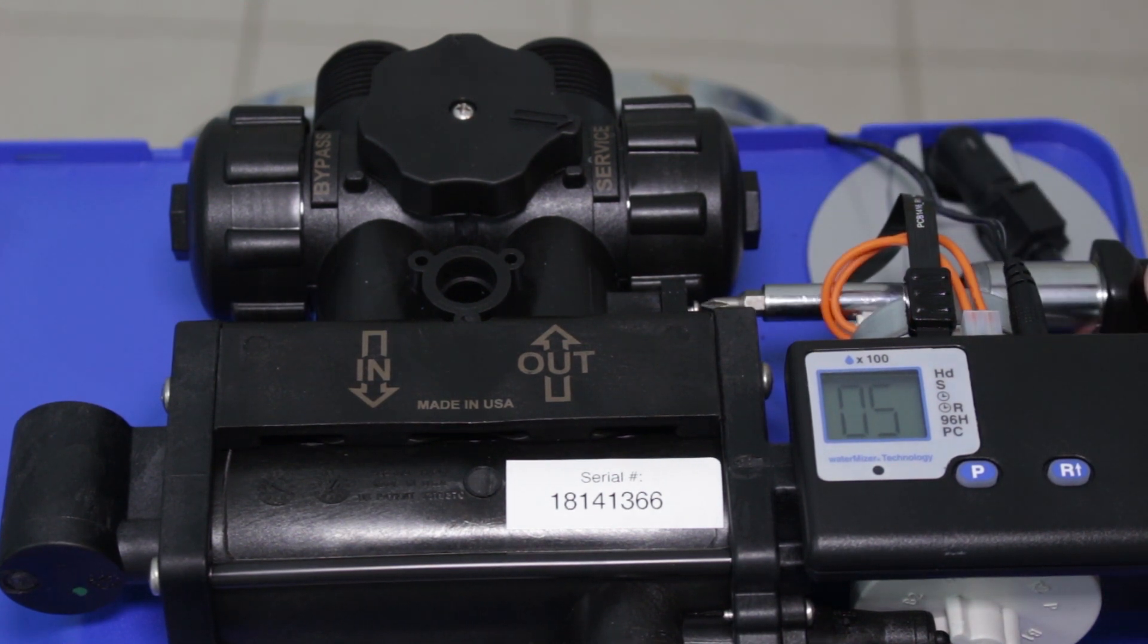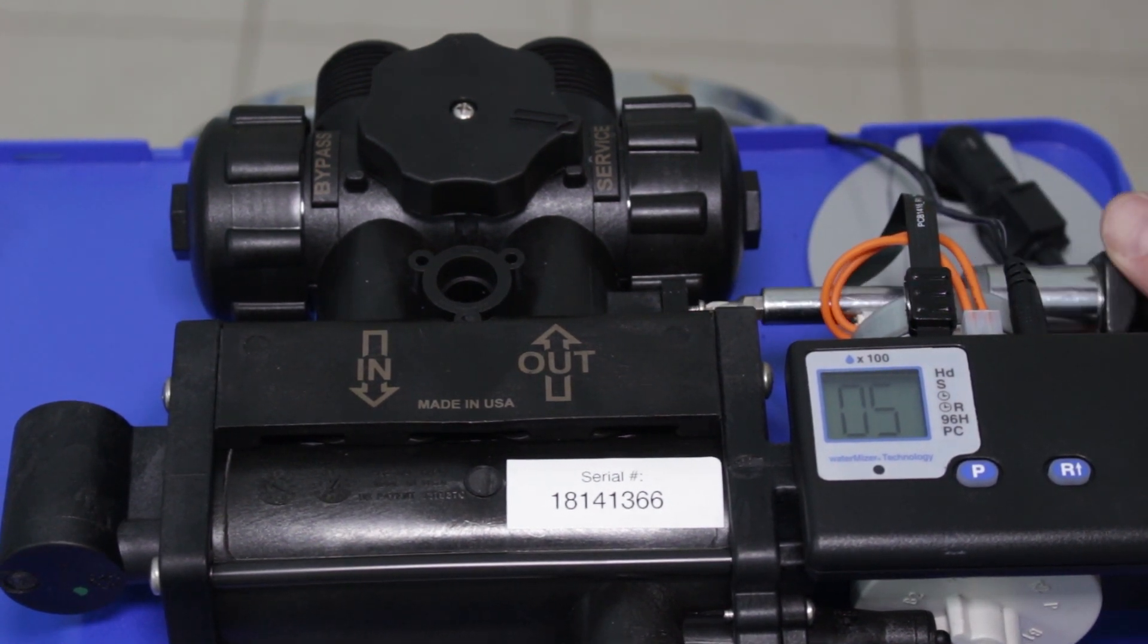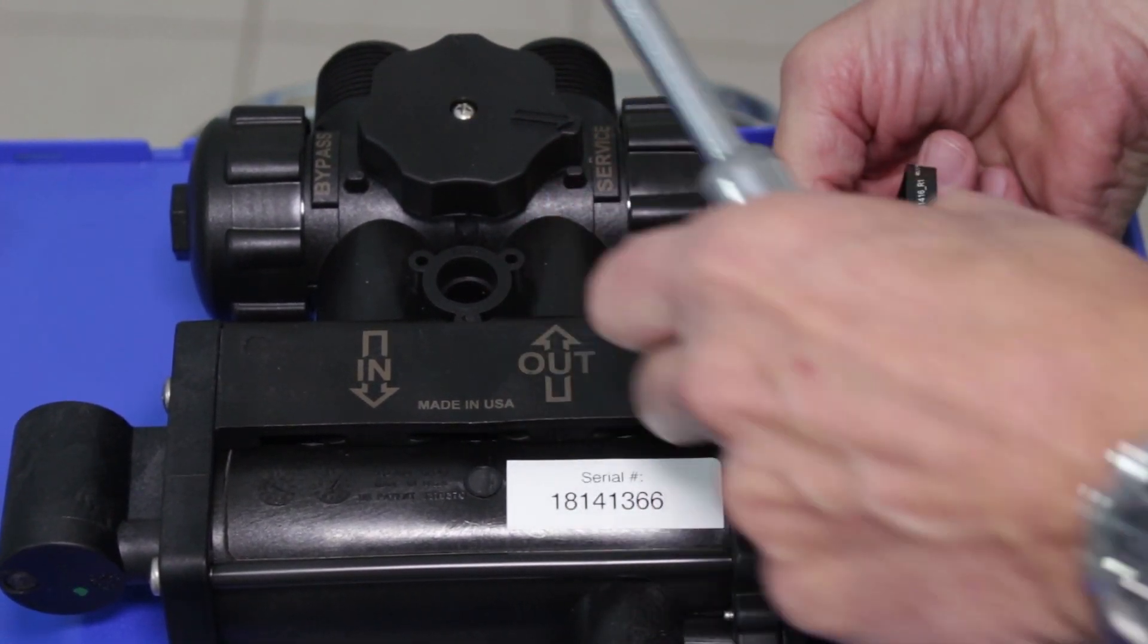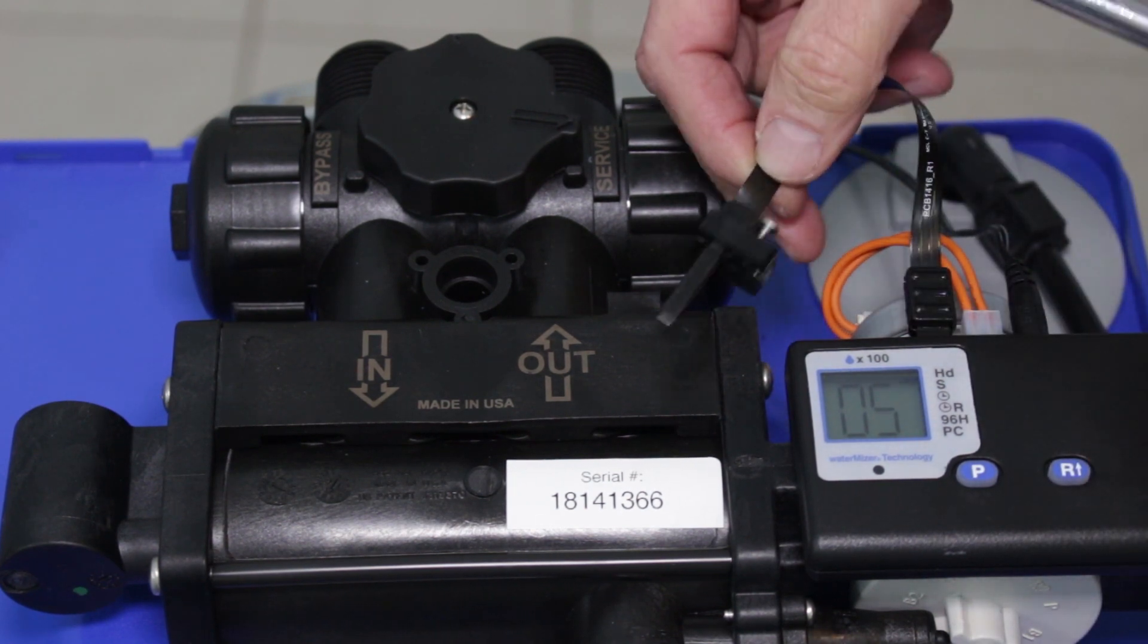What you would do is remove the flow sensor, which is inside here. This is one little screw that you need to pull out. And then when you pull it out, this is the flow sensor here.